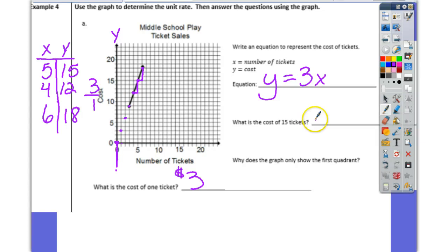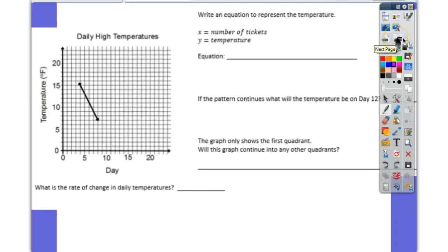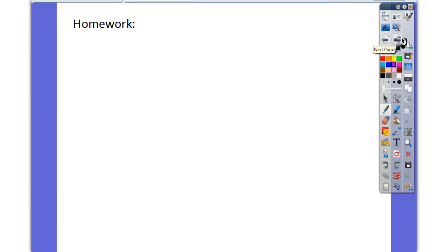What's the cost of 15 tickets? So, what's 3 times 15? $45. What's the cost for 30 tickets then? $15 or $45? How much are... $90. $90. You just double it. Alright, your homework. Pages 3, 4, 5, and 6.